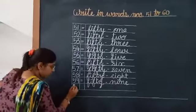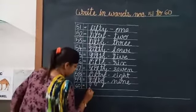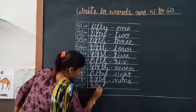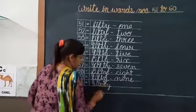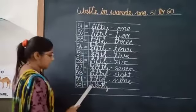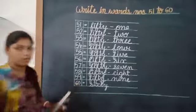Which number will come after 59? 60. S-I-X-T-Y, 60. S-I-X-T-Y, 60. 60.